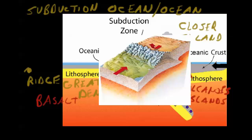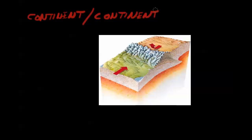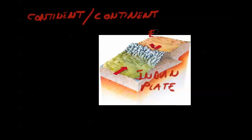The last type of converging boundary to talk about is continent-continent collision. The best example would be the Himalayan Mountains, formed by the Indian plate colliding with the Eurasian plate. The Indian plate has greater density and is subducting underneath the Eurasian plate — remember the Indian plate would have ocean and therefore basalt on its leading edge, giving it greater density.